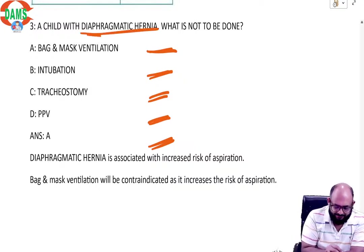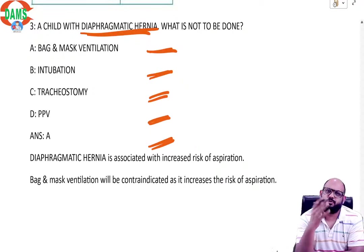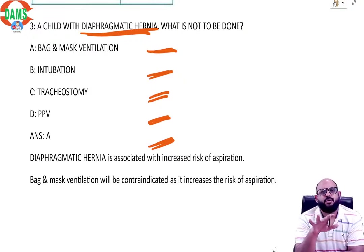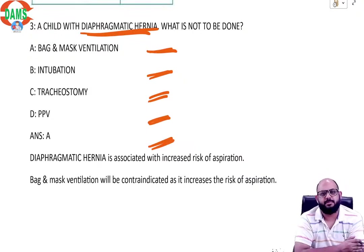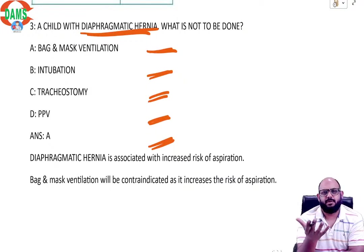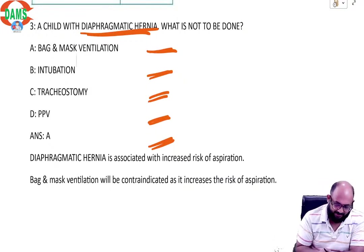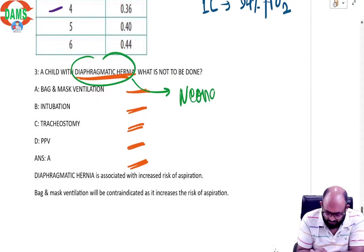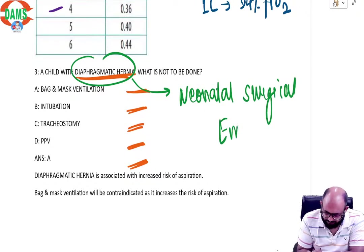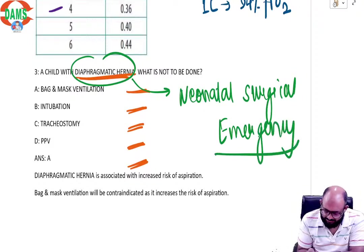Question number three: a child with diaphragmatic hernia. The moment you hear diaphragmatic hernia, you should know that you do not have to do anything to increase the gastric volume and increase the risk of aspiration. What is diaphragmatic hernia? We know there is a hole in the diaphragm through which abdominal contents reach the mediastinum. Now, obviously when a child, a neonate is born of diaphragmatic hernia, you have to remember one thing that diaphragmatic hernia is a neonatal surgical emergency for multiple reasons.